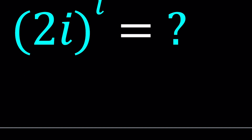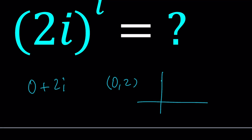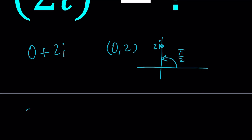2i is 0 plus 2i, so it can basically be represented by the point (0, 2) on the complex plane. So the angle it makes, or the argument, is pi over 2, and its modulus is obviously 2, the absolute value. So we can write 2i as 2 times e to the power i·pi/2.